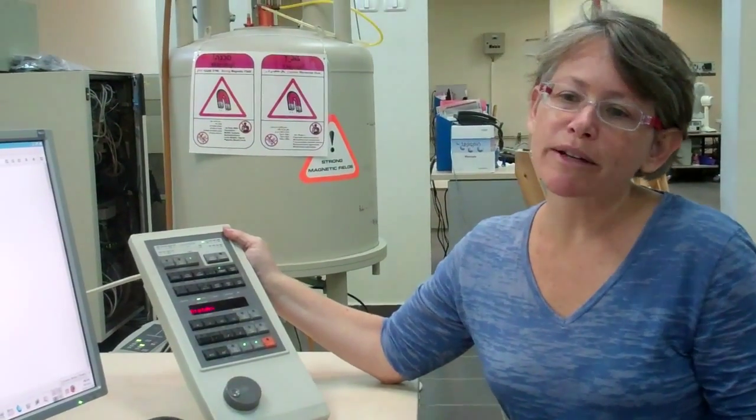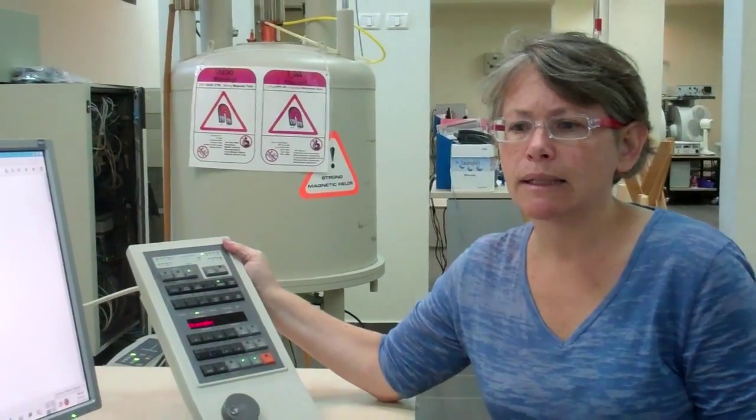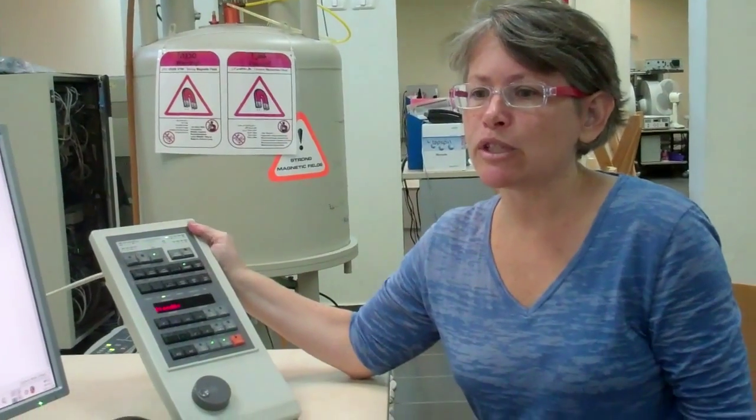For standard pulse-acquire experiments on the 200 or 300 megahertz spectrometers, we usually spin. The spin rate we use is 20 hertz.